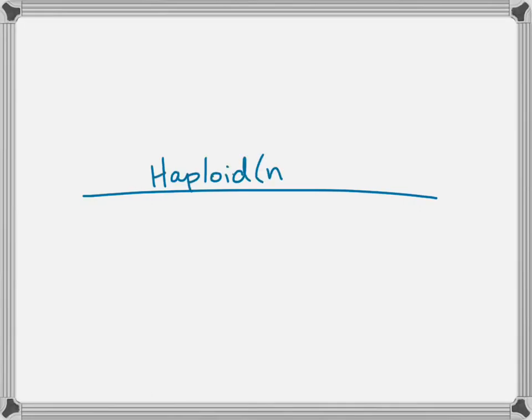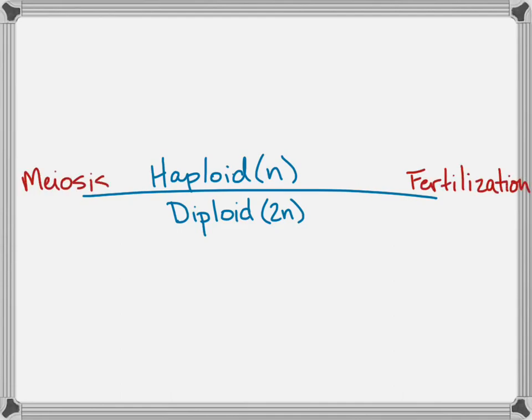I want to review the alternation of generations with you. We're used to haploid and diploid organisms, but in alternation of generations, there's actually a generation that's haploid and a generation that's diploid. Just like with diploid organisms, we're going to see fertilization occur, we're going to see meiosis occur, and we're also going to see mitosis occurring. So the cell cycle that we know as a diploid organism is still happening in these alternating generation plants.